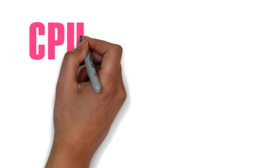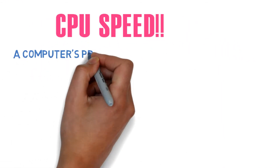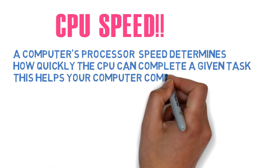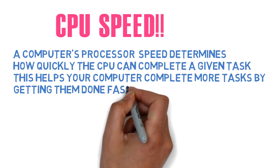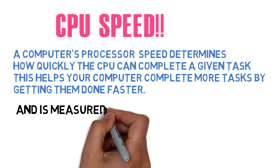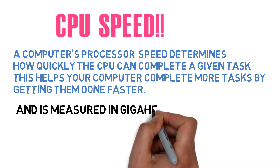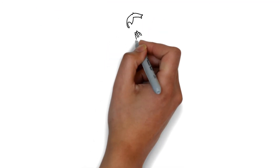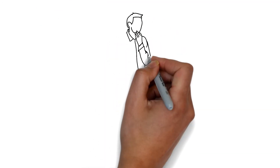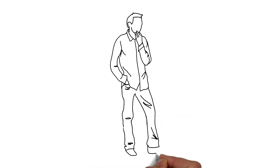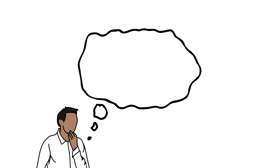Do you know what your CPU speed is? A computer's processor speed determines how quickly the CPU can complete a given task. This helps your computer complete more tasks by getting them done faster, and it is measured in gigahertz.